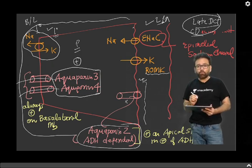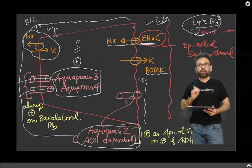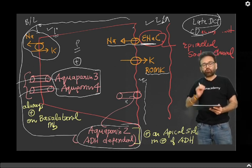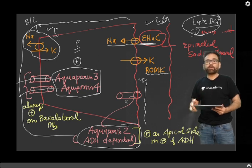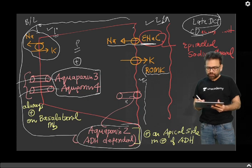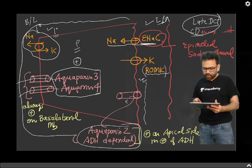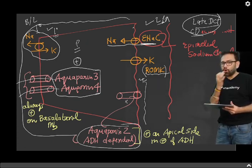Now, there is one more channel for sodium, and that is a very important channel called ENAC — Epithelial Sodium Channel. ENAC is the Epithelial Sodium Channel and it works under the influence of aldosterone. And there is ROMK — Renal Outer Medullary Potassium — one of the most important potassium channels present on the apical or luminal side.